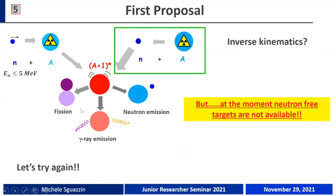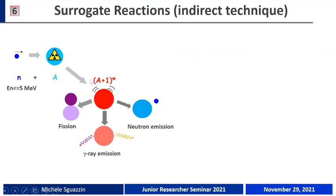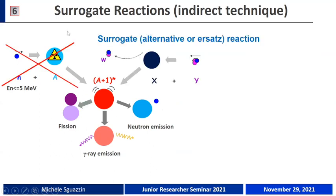So we should try again. The point is that we should find a way to reach this compound nucleus when the formation channel — the interaction where the neutron is absorbed by the target — is not possible due to the high radioactivity of the target. The most promising approach is to use the surrogate reaction method. The idea is to provide an alternative combination of beam and target that allows us to reach the same compound nucleus, and then measure the decay probabilities.